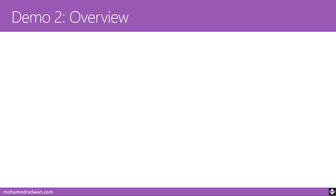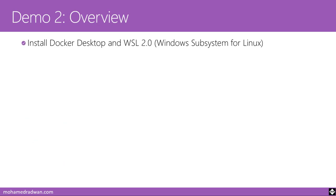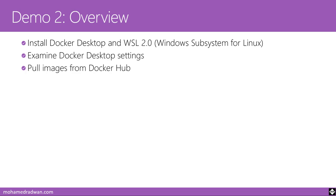In this demo you will learn how to install Docker Desktop and Windows Subsystem for Linux, which is required to work with Docker Desktop on Windows. Then we will examine Docker Desktop settings, and we will start pulling an image from Docker Hub or Docker registry. After that, we will see how to run a container in interactive mode.